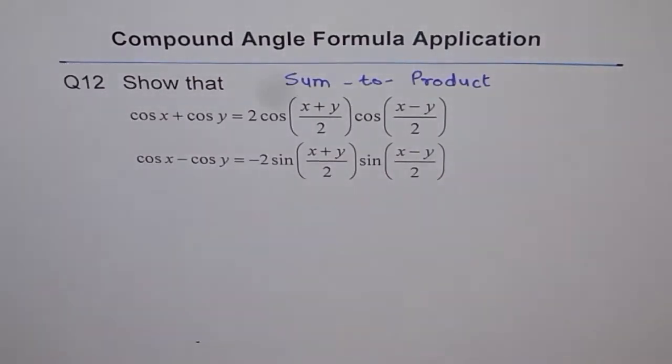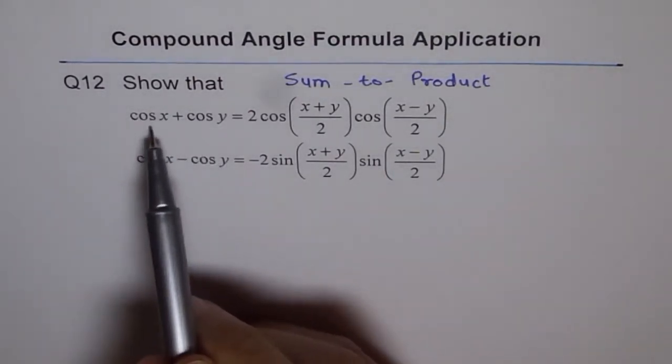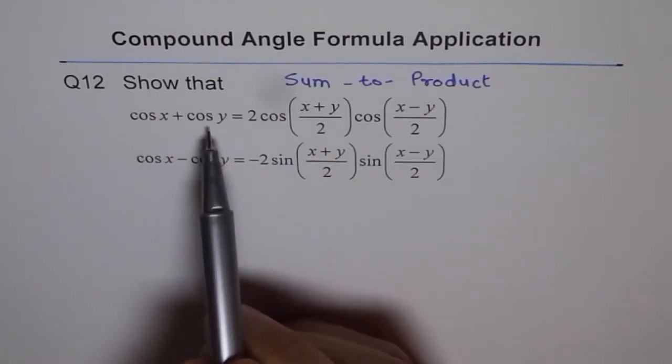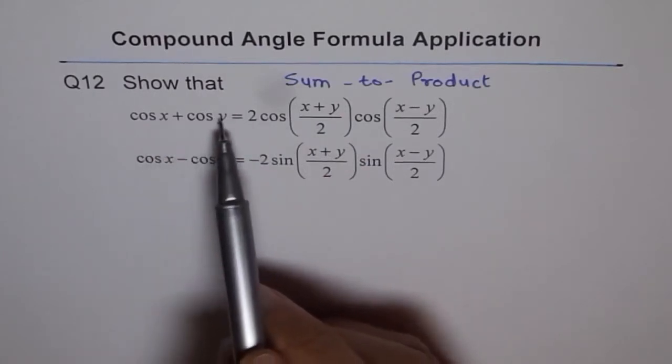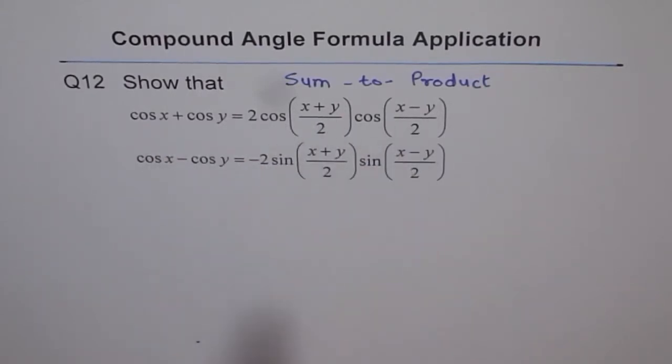So we call them sum to product since cos x plus cos y, the sum of cos x and cos y, is converted to a product form where we have combination of x plus y by 2 as an angle, or x minus y by 2. A very useful formula to prove identities and to solve trigonometric equations.